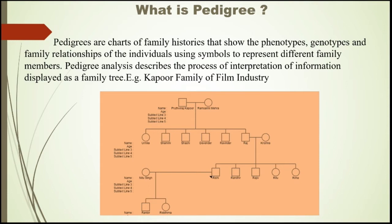Here I have prepared one pedigree chart of the Kapoor family, starting from Tutraj Kapoor to Ranbir Kapoor. I prepared this pedigree with the help of data, and the proband I used — proband means the individual from whom the data was collected — is Rishi Kapoor. You can see that on Rishi Kapoor's square there is a small black arrow, which indicates that Rishi Kapoor is the proband.